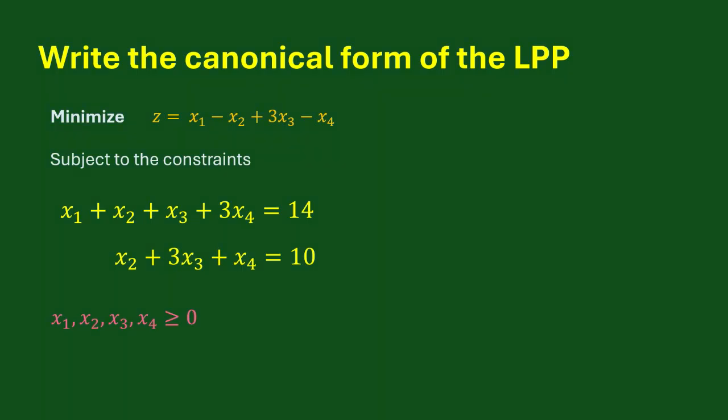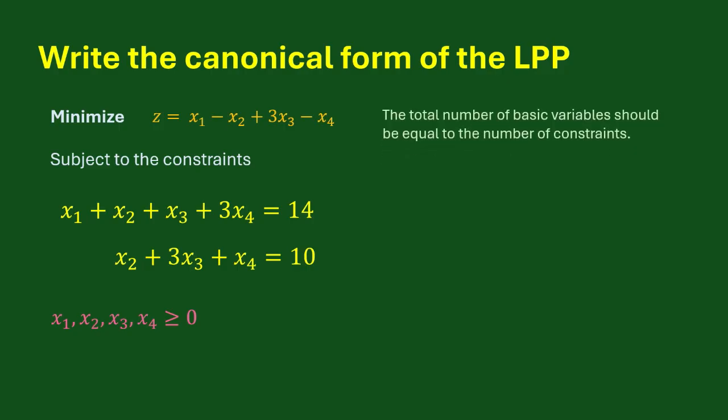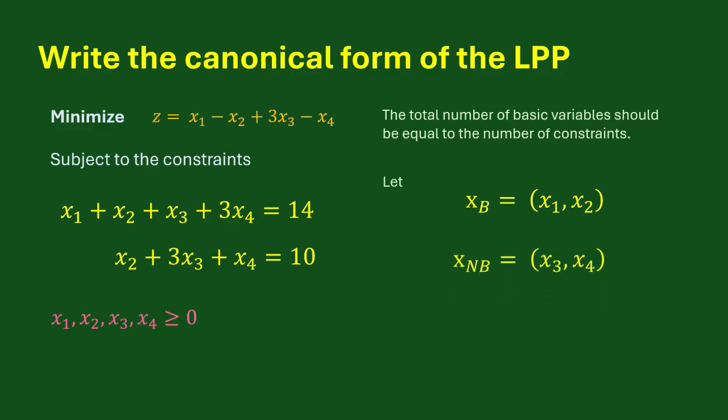One of the requirements for the canonical form is that the total number of basic variables should be equal to the number of constraints. In this problem, we have two constraints, therefore it will have two basic variables. Let's say x1 and x2 form the vector of basic variables, which means x3 and x4 are non-basic variables in this example.